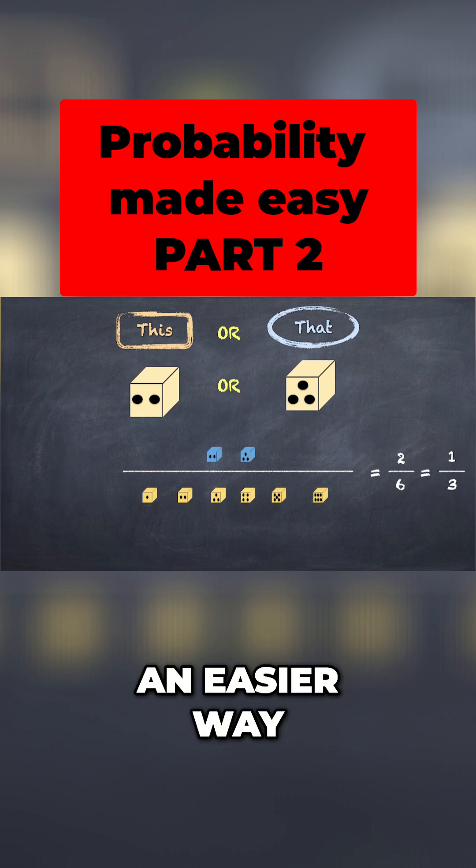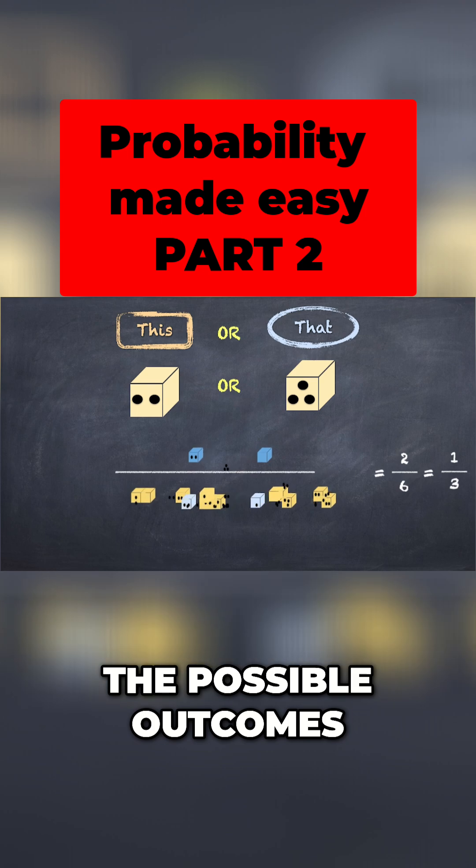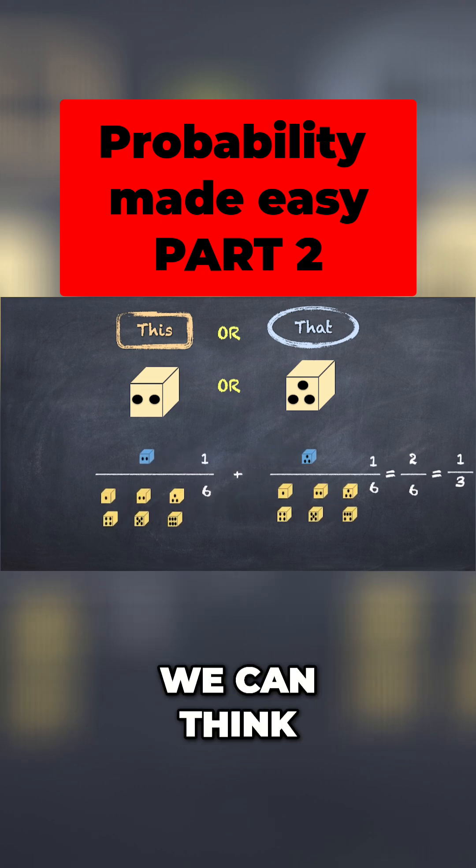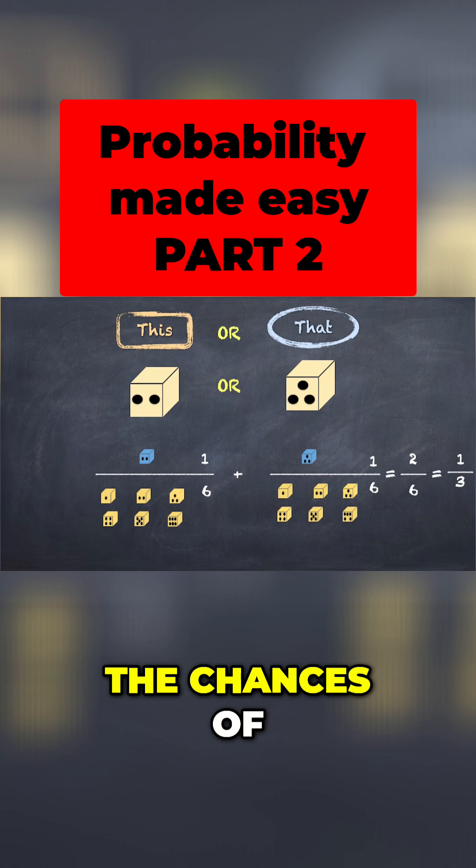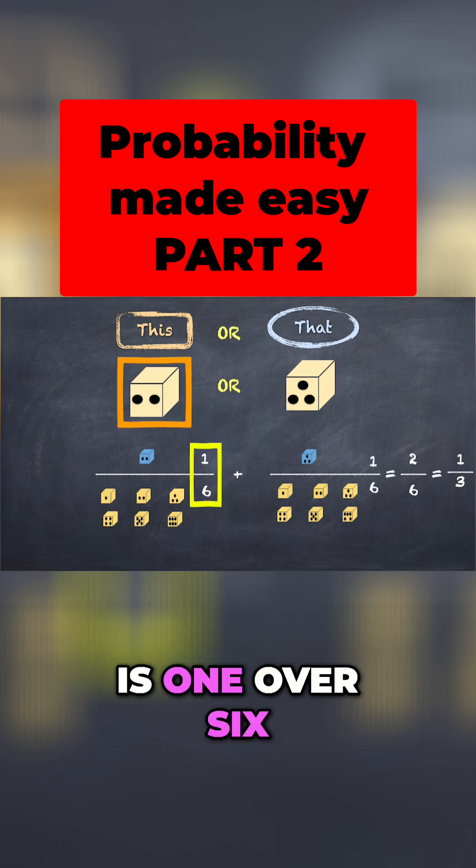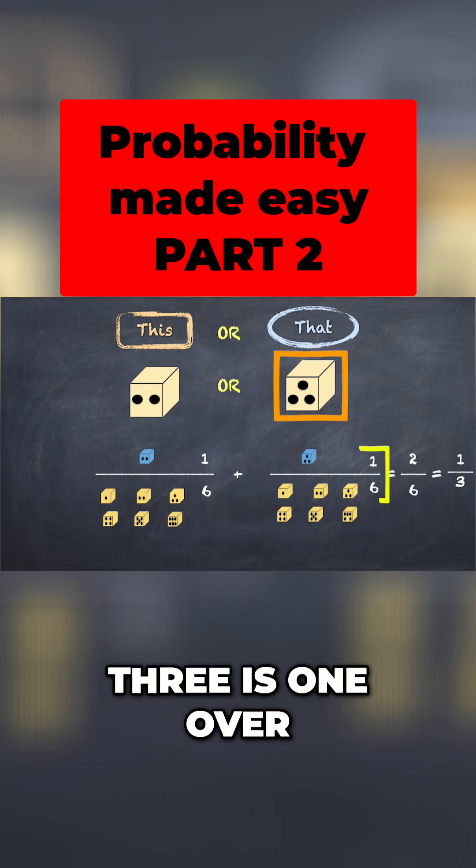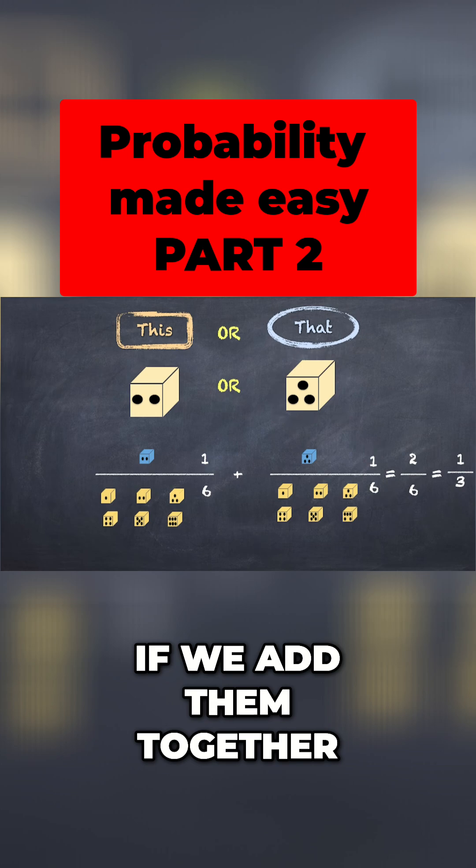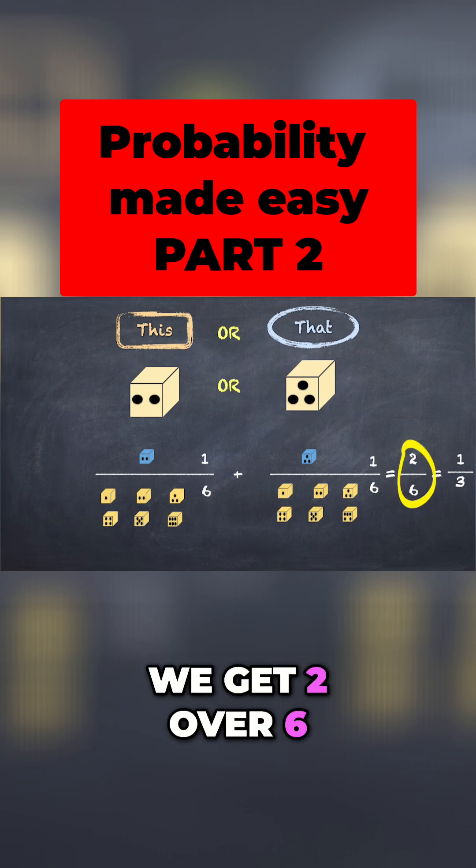But is there an easier way of us getting there without having to count up all the possible outcomes? And the answer is yes. We can think about the probability of each outcome and then add them together. The chances of rolling a 2 is 1 over 6, and the chances of rolling a 3 is 1 over 6. If we add them together, we get 2 over 6, which is 1 over 3.